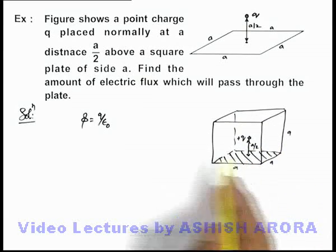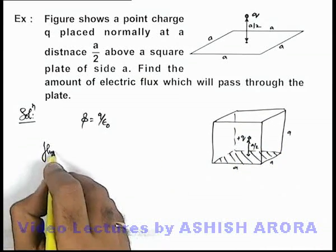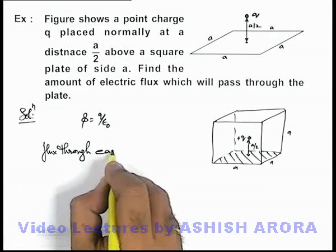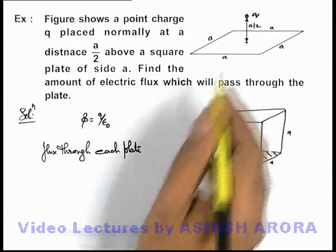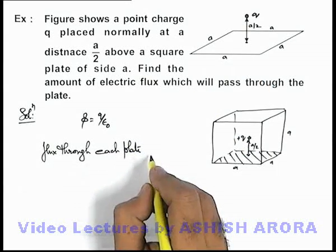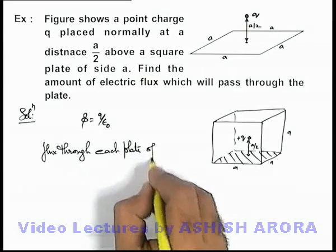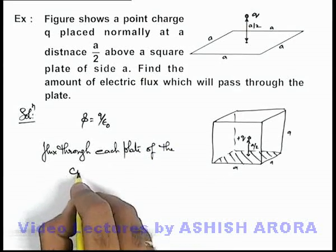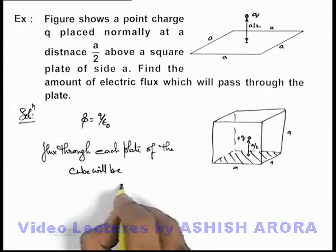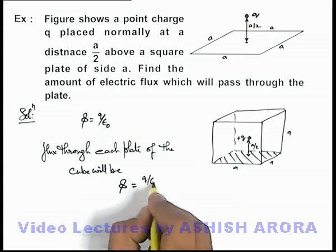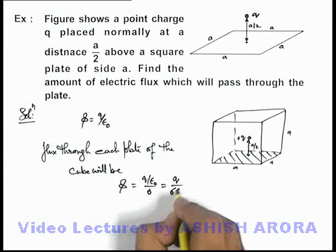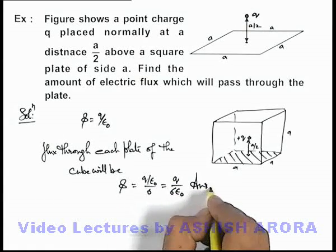As there are 6 plates, we can say that the flux through each plate — or the plate which is given in the situation of the problem — flux through each plate of the cube will be q/ε₀ divided by 6. This can be written as q/(6ε₀), and that will be the answer to this problem.